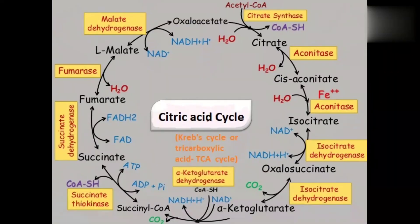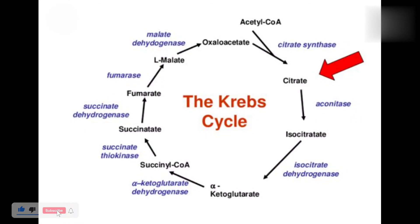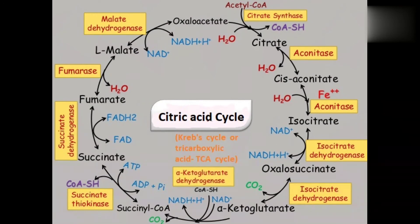Isocitrate is converted into oxalosuccinate with the help of isocitrate dehydrogenase. Then oxalosuccinate is converted into alpha-ketoglutarate — this step requires no additional enzyme. Next, alpha-ketoglutarate is converted into succinyl CoA with the help of alpha-ketoglutarate dehydrogenase.